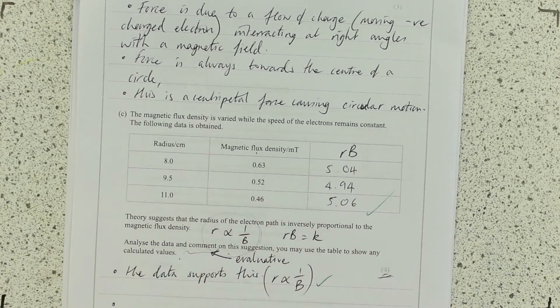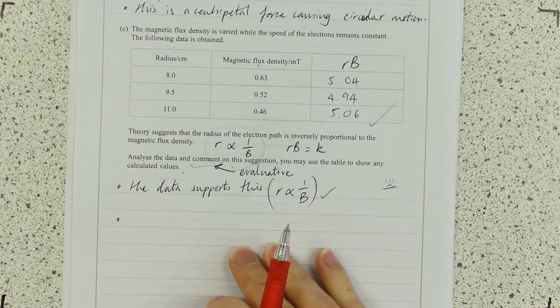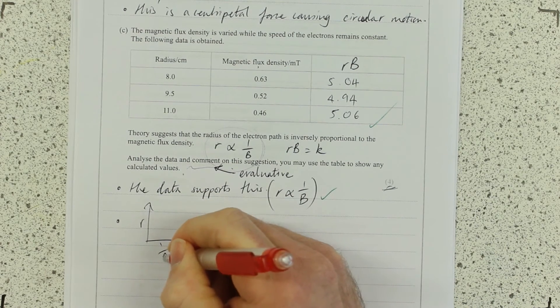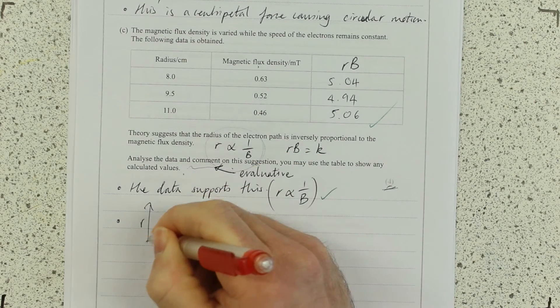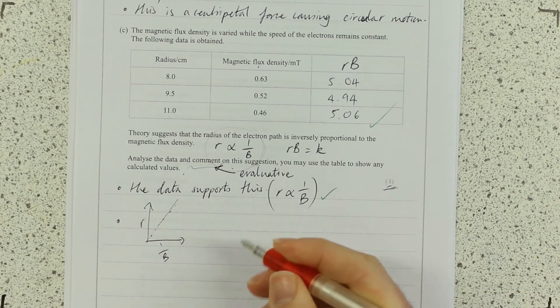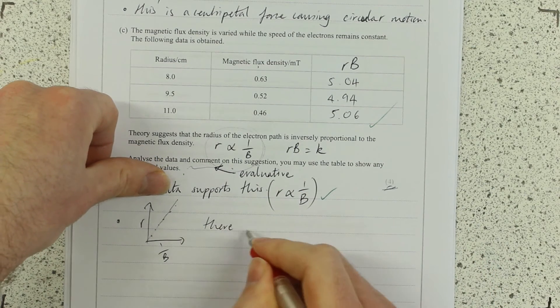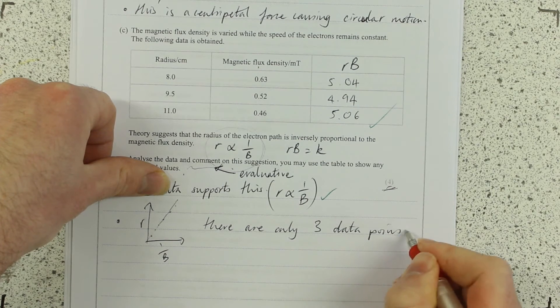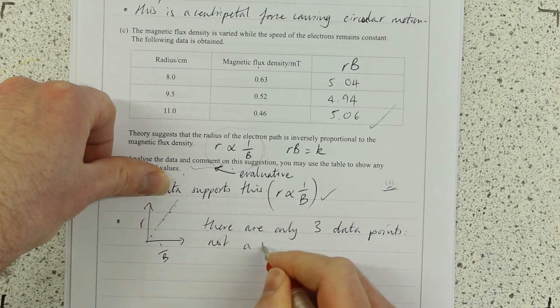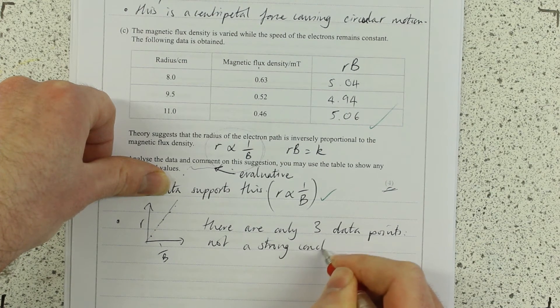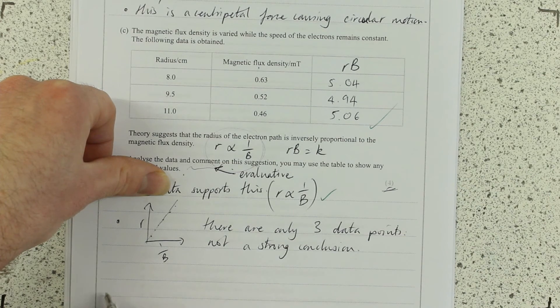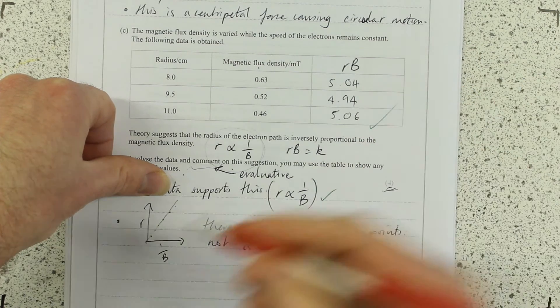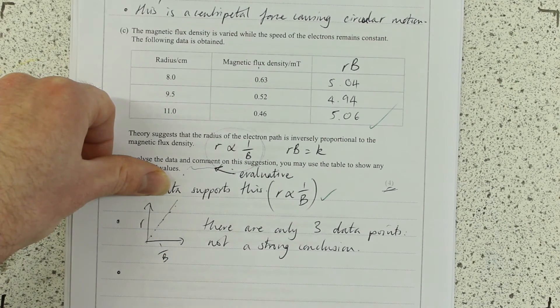And then the next points, for my next two marks, I'm thinking, how many data points do I have? If I'm wanting to show that R is inversely proportional to B, I'm going to want at least seven points to say I've got a straight line relationship between R and 1 over B. I've only got three points. There are only three data points. So this is not a strong conclusion. Or it's not a clear trend. Three data points like that could also be a curve if you look.